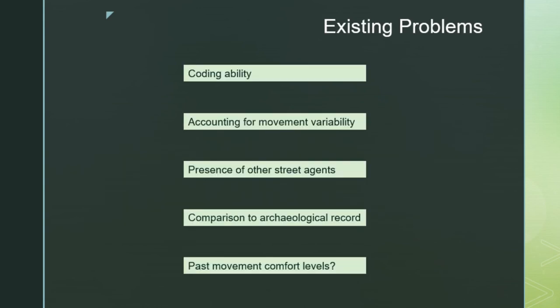Going back to the models, some of the problems I'm running into: first, coding ability — not necessarily the inability to code, but the time spent figuring out what's not working, or whether it's working as it should. Then there's accounting for movement variability: I want my followers to always follow the leader, but not in a single file line. I want to account for dynamics like someone getting tired of the procession and leaving, or another person joining in — and also bringing in other street agents beyond just the procession itself.